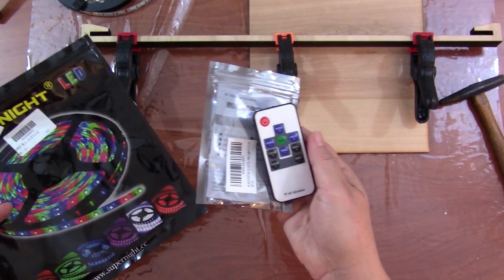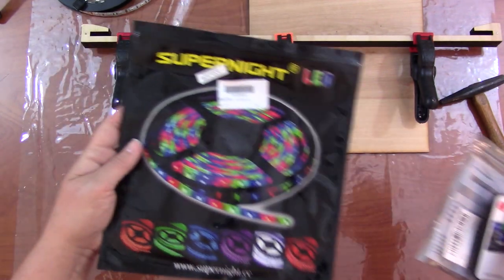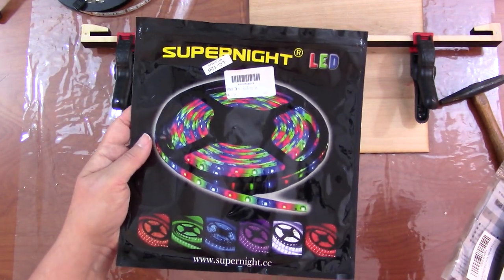You can buy a controller and receiver like this on Amazon for about $6.50. And a 16 foot strip of lights is about $11.